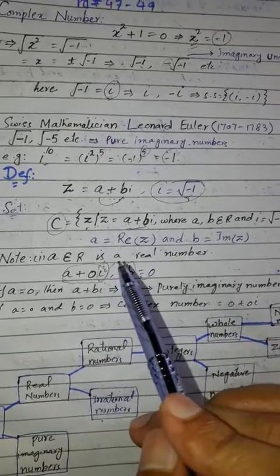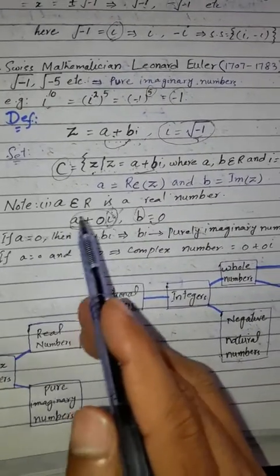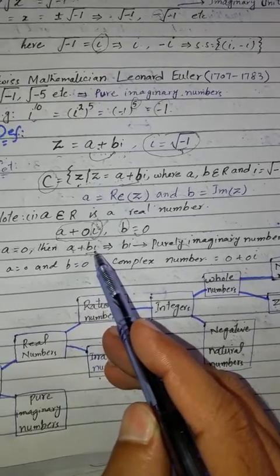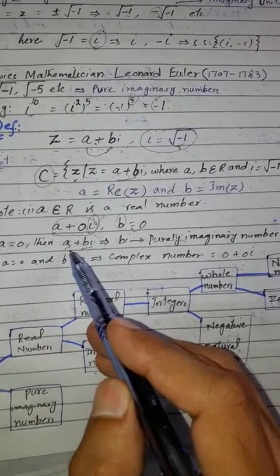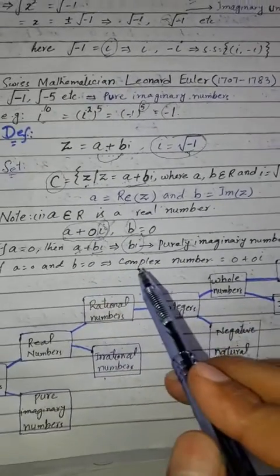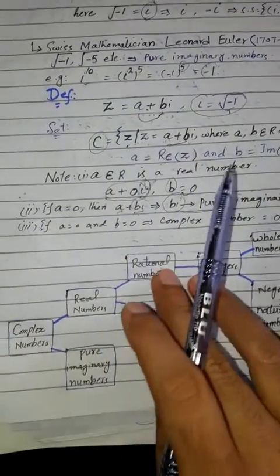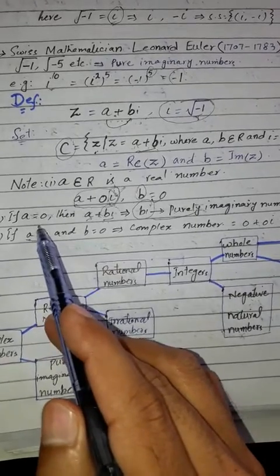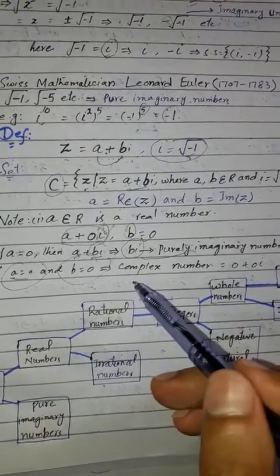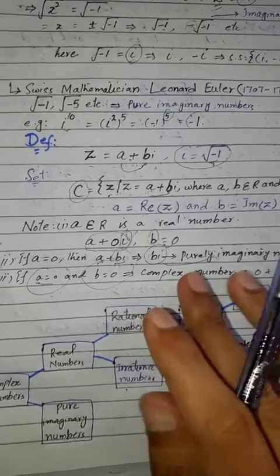Every complex number is a complex number. Also, if A equals zero, then only B iota remains — B iota is a purely imaginary number. And if both A and B equal zero, then that number is zero itself, which is also a complex number.